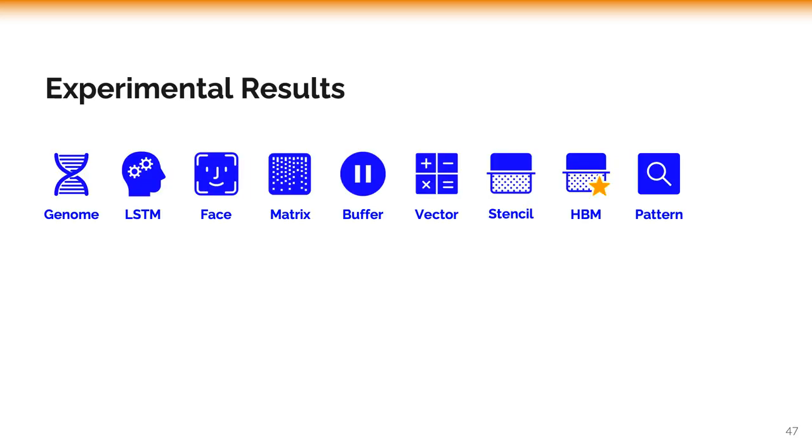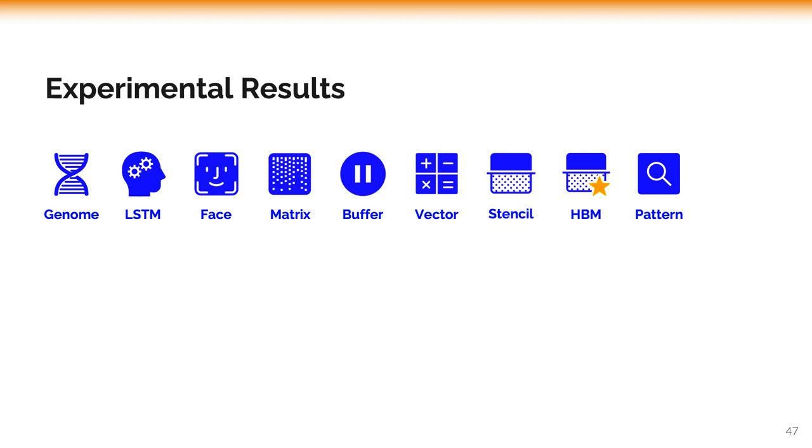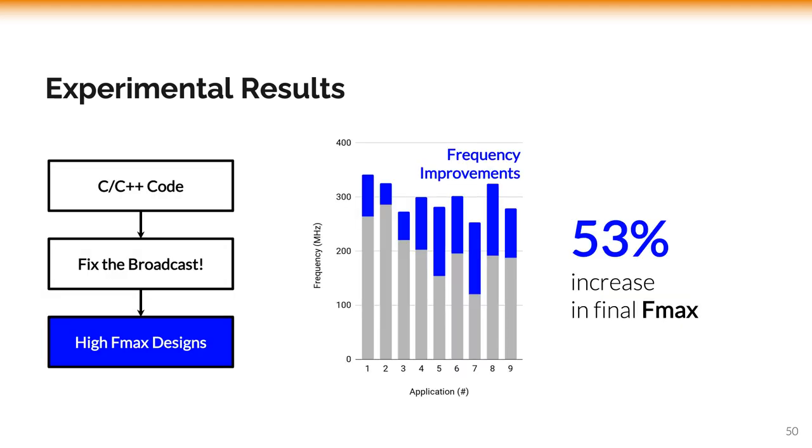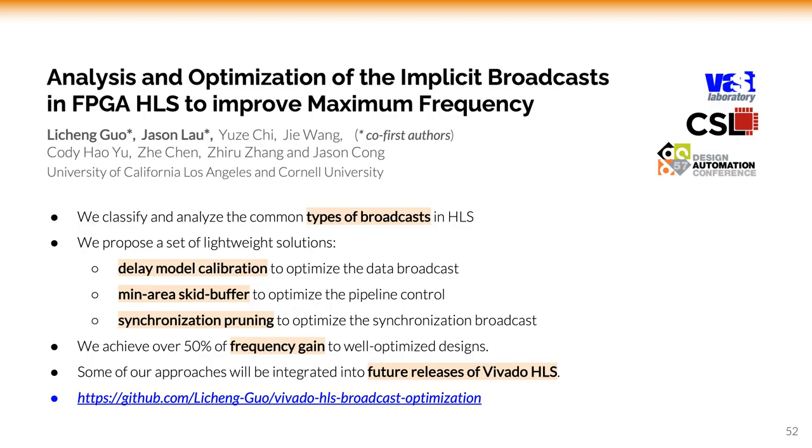We performed experiments on a set of real applications across multiple domains with different FPGA boards from data center grade to embedded. All these HLS implementations are large designs published on top conferences that provide high performance. Results show that our HLS optimization methods can improve the maximum frequency by 53% on average, with some designs having improvements over 100 MHz.